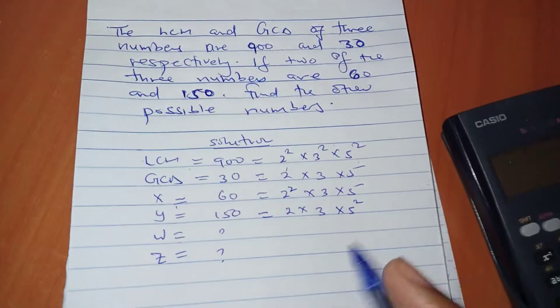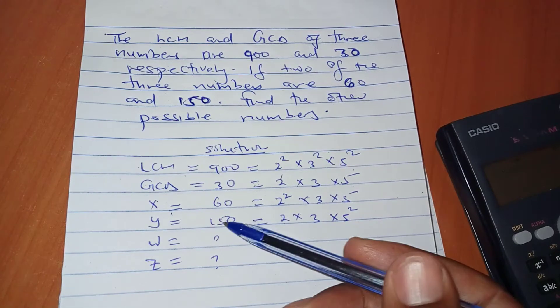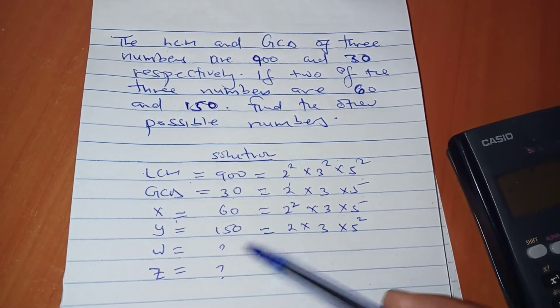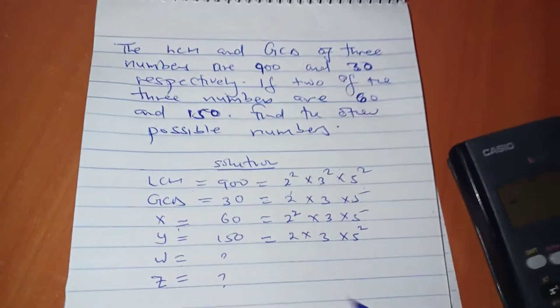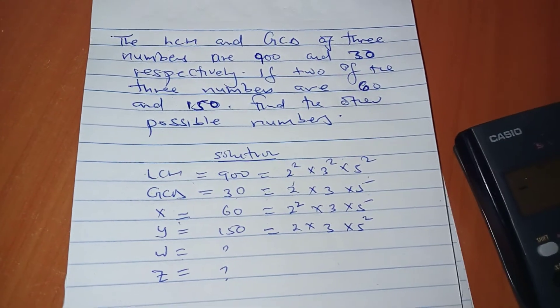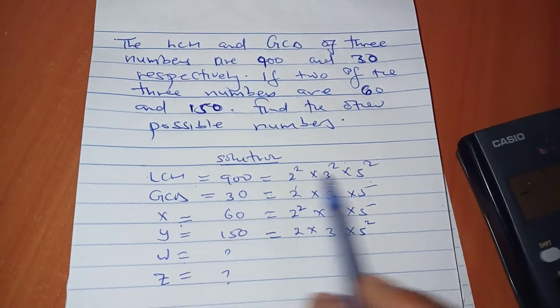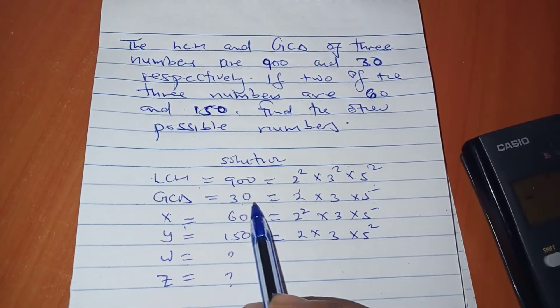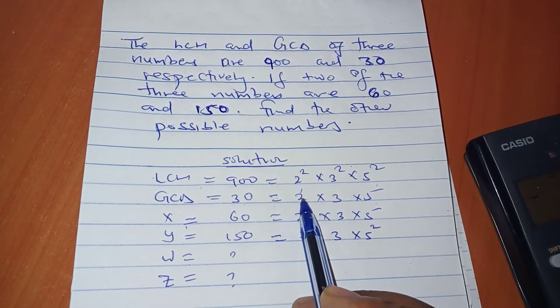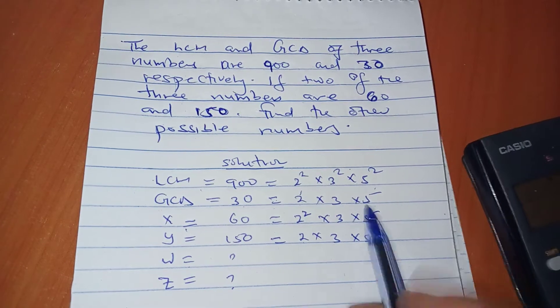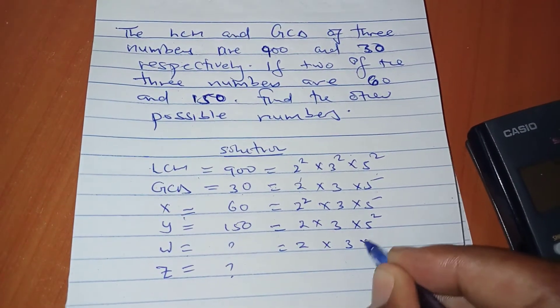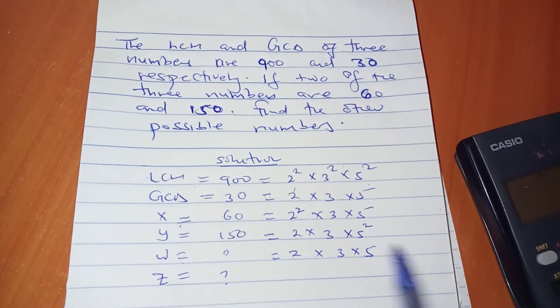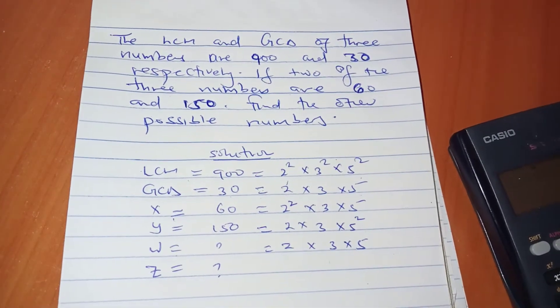How do we get the other number? We can have more than one number, but let's first find the minimum. We have two constraints: the GCD constraint and the LCM constraint. The GCD says it must have 2¹ × 3¹ × 5¹, so those must feature in our number. Then you can alter the powers depending on what the LCM requires.